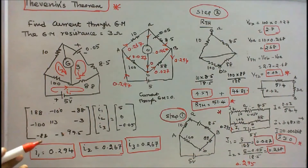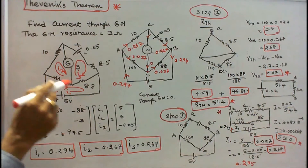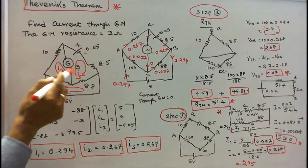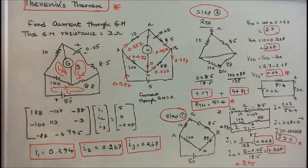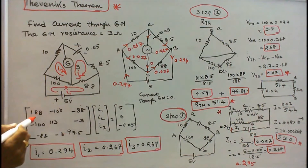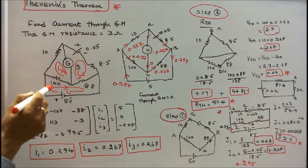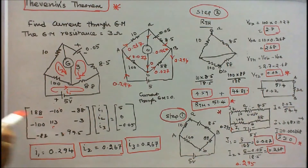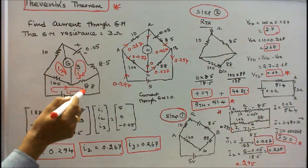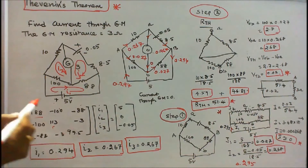To form the matrix: the first loop diagonal resistance is 100 plus 88, equal to 188. The second loop resistance is 100 plus 10 plus 3, equal to 113. The third loop resistance is 88 plus 8.5 plus 3, equal to 99.5. The element common to loops 1 and 2 is 100, so the off-diagonal entry is minus 100. The element common to loops 1 and 3 is 88, giving minus 88. The element common to loops 2 and 3 is 3, giving minus 3.